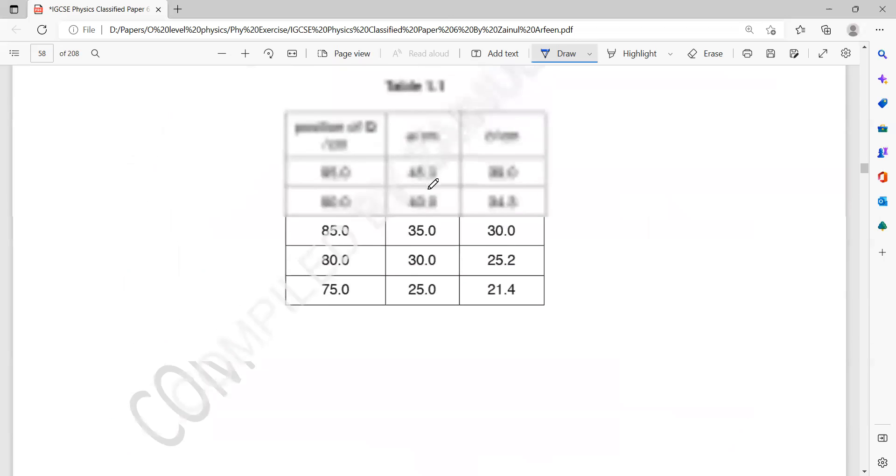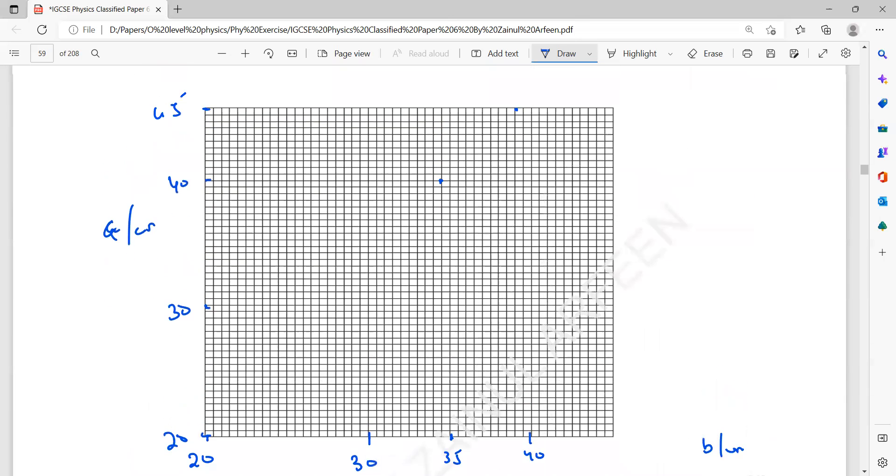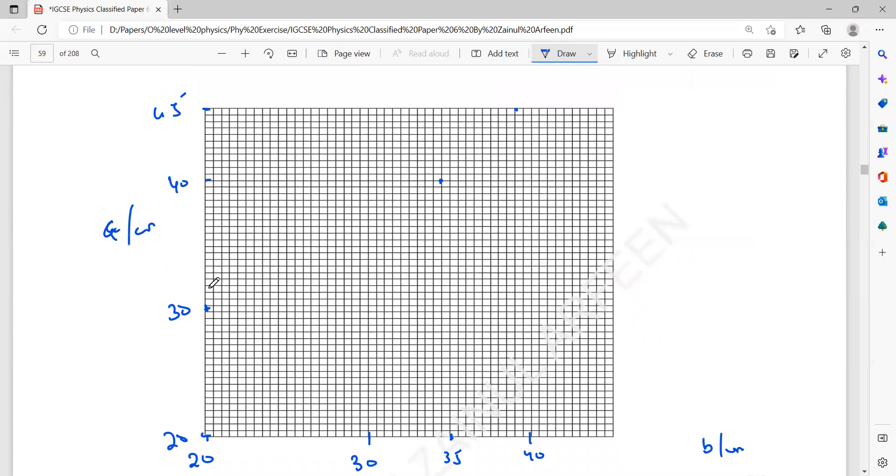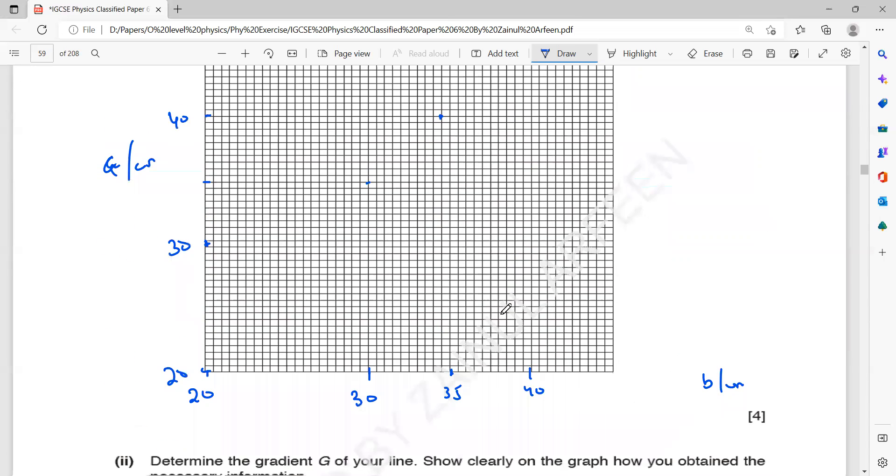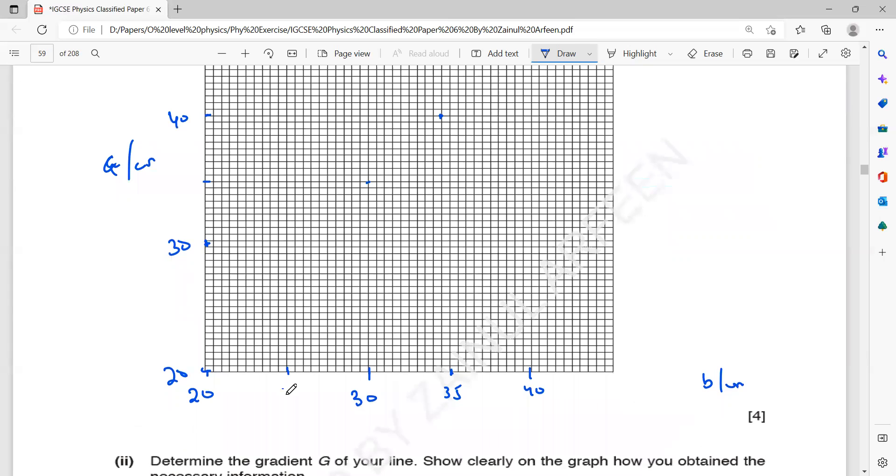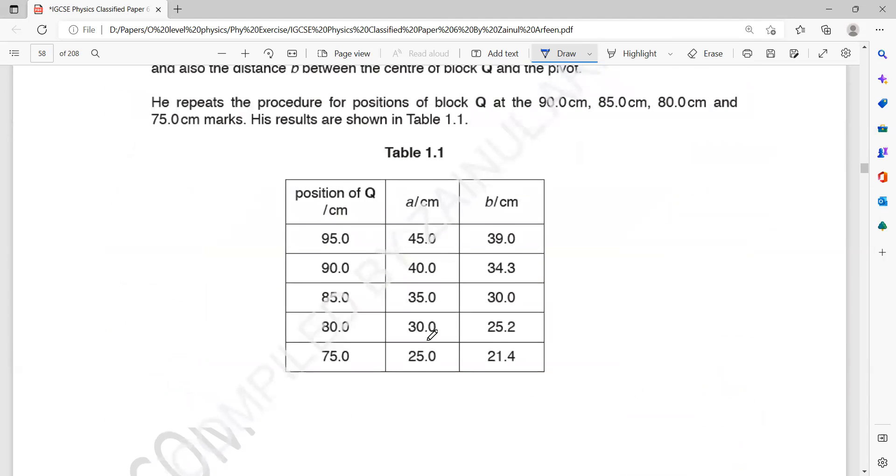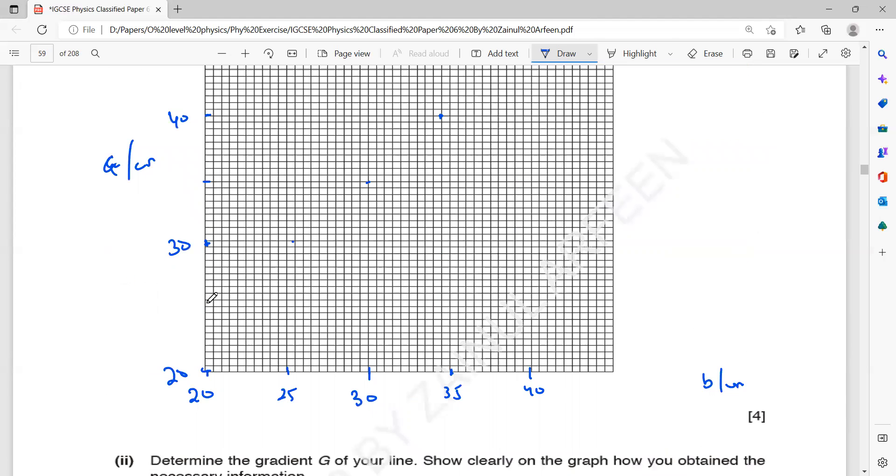The next one is 35 and 30, so A is 35, B is 30. The next one is 30 and 25.2. And then the last one is 25 and 21.2, 25 and 21.4.